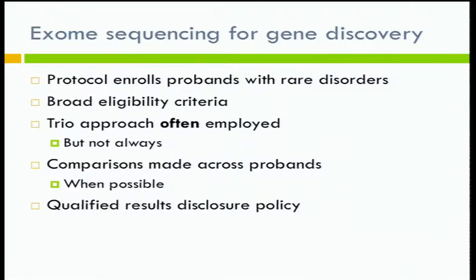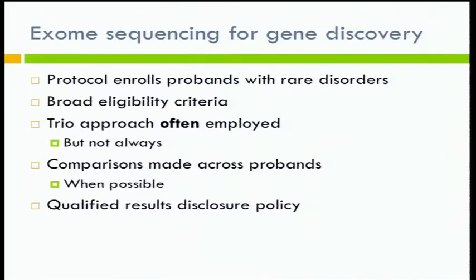The goal of the gene discovery protocol is to find genes for disorders across a very broad category. We enroll probands with rare conditions and have very broad eligibility criteria. We've enrolled participants as young as one day old; our oldest participant is about 83 or 84 years old. The spectrum of conditions ranges from severe neonatal onset congenital anomaly disorders to more adult onset endocrine disorders. We often employ a trio approach — enrolling moms, dads, and kids, where kids are usually the affected probands — and we make comparisons across probands as part of our filtering strategies.